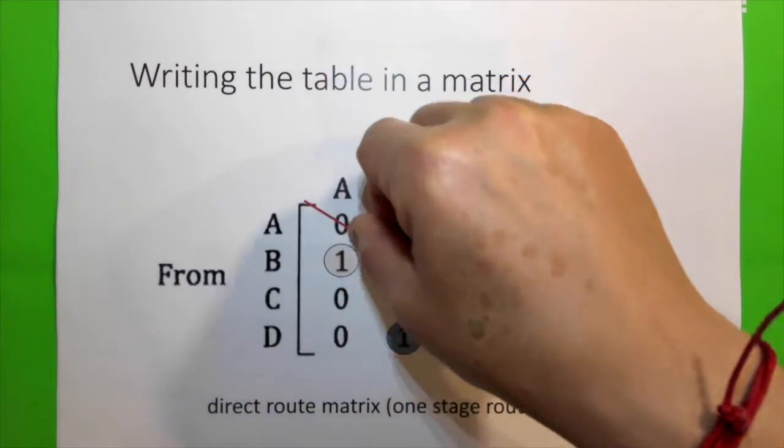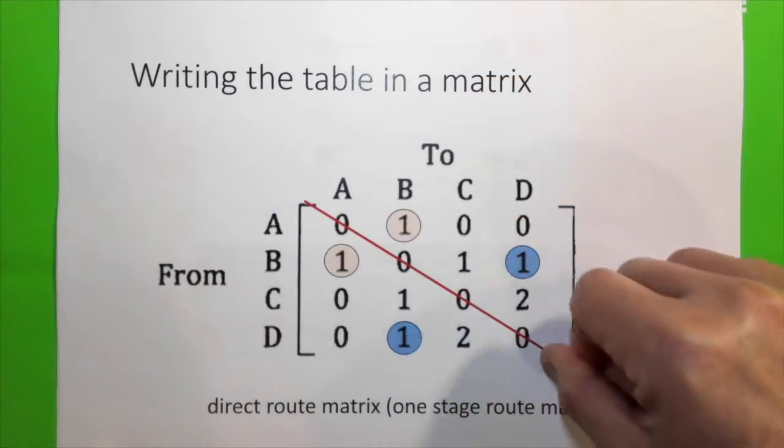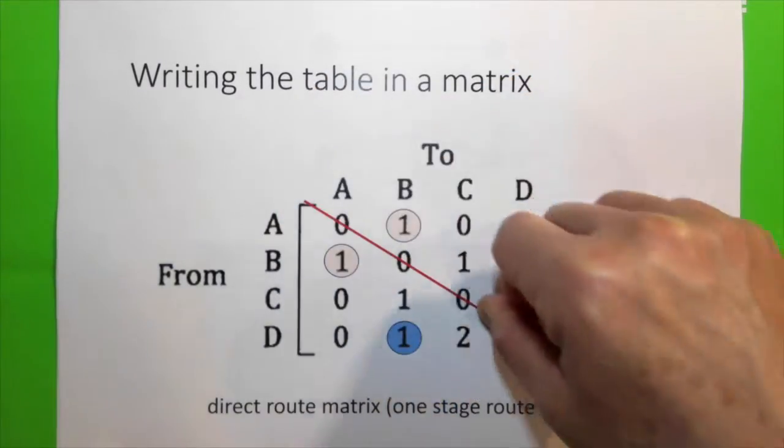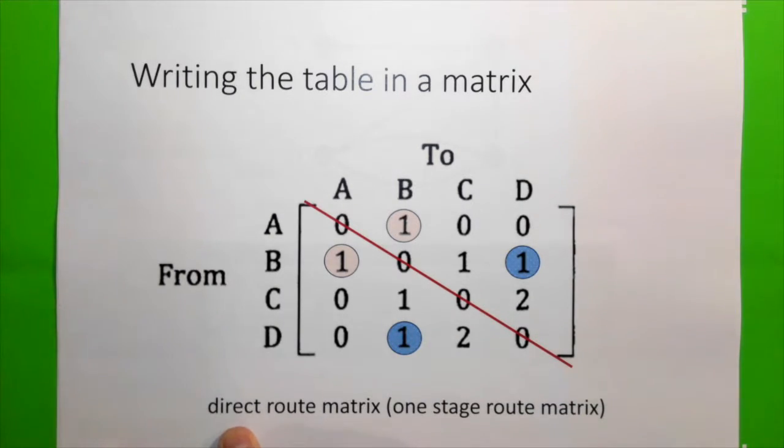And look at the leading diagonal. It's 0. All the elements in the leading diagonal is 0. We call this a direct route matrix, or one-stage route matrix, or some books just call it a route matrix.